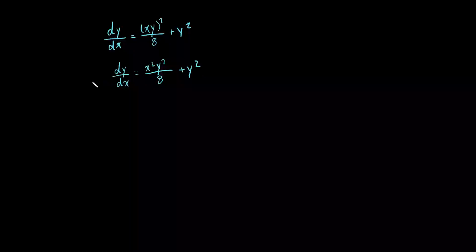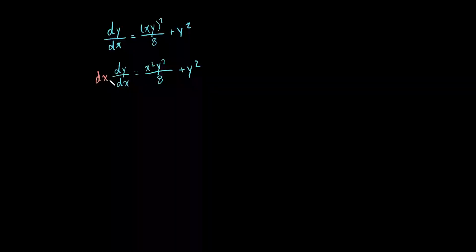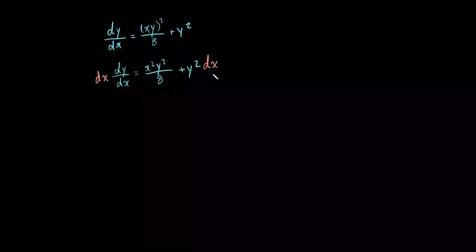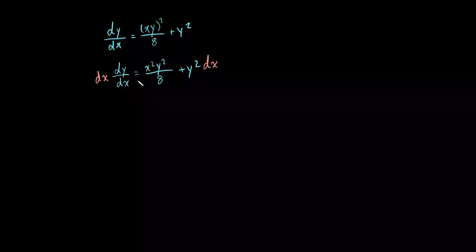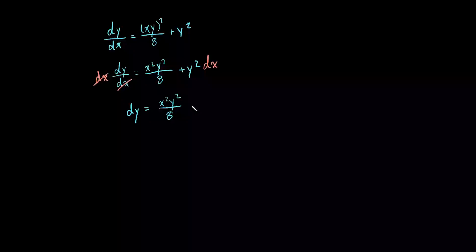From here, we can multiply both sides by dx. So now what we're left with is dy is equal to x squared times y squared divided by 8 plus y squared, all being multiplied by dx.